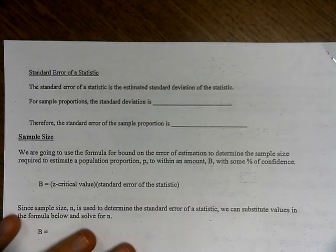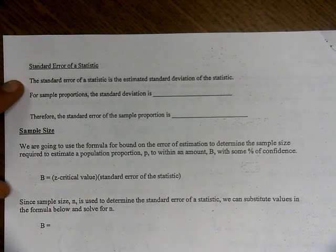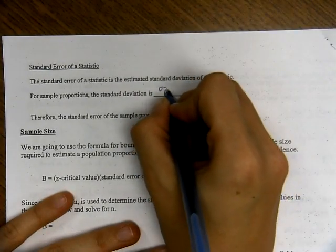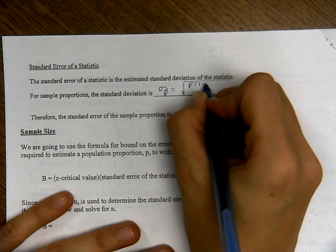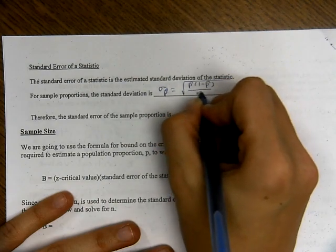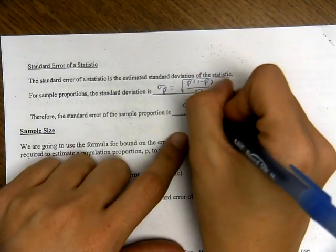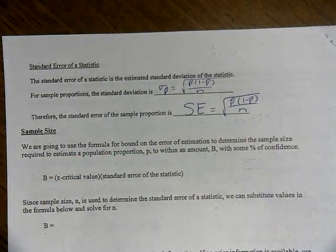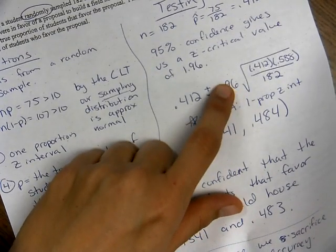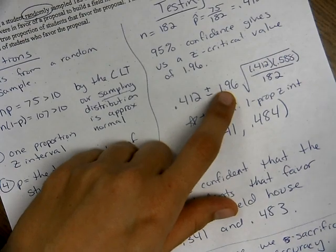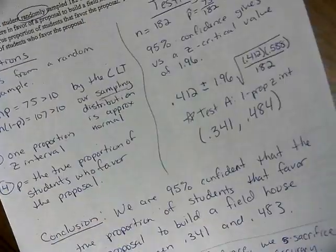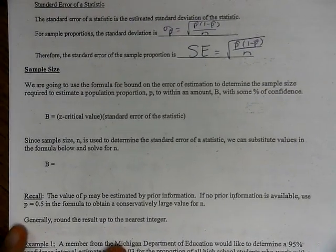We also have standard error of a statistic. The standard error is estimated by the standard deviation: sigma p-hat equals the square root of p-hat times (1 minus p-hat) over n. Margin of error is kind of the same thing, but it includes your z-critical value. If you read the newspaper and they say the margin of error is 2%, it's really focusing on those two components.